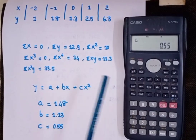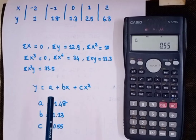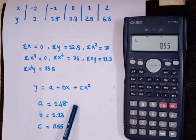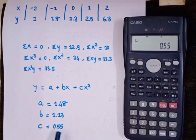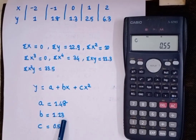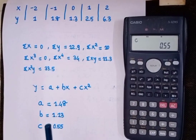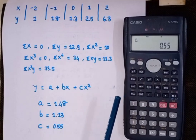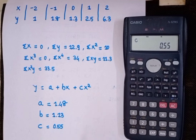In my other video I showed that after putting these values into the normal equations, we get three equations which can be solved using the calculator. So the required equation of the parabola is y = 1.48 + 1.13x + 0.55x². This is how you find all sigma values and a, b, c using the Casio fx-82MS calculator.